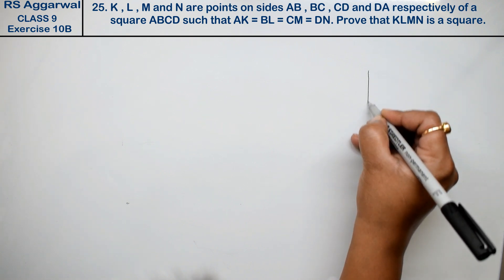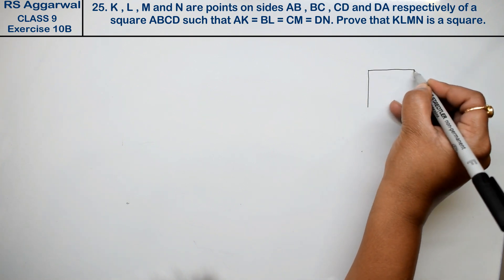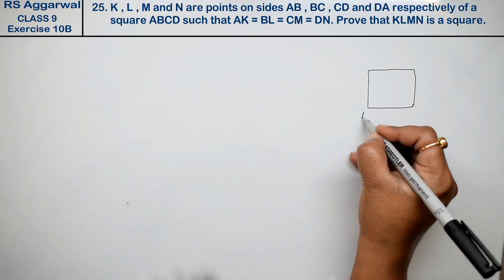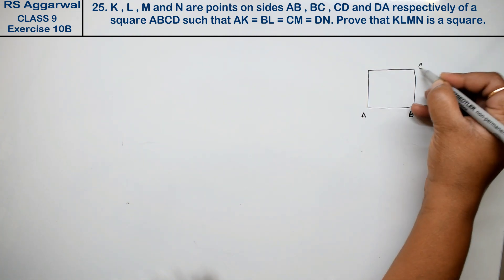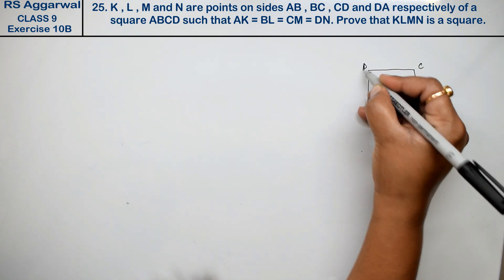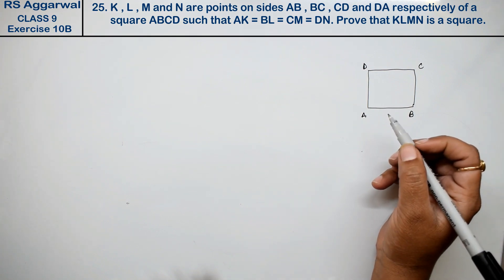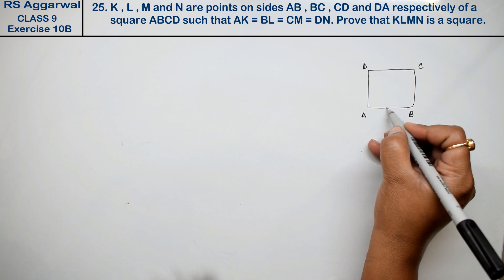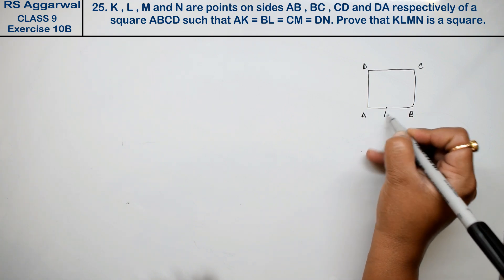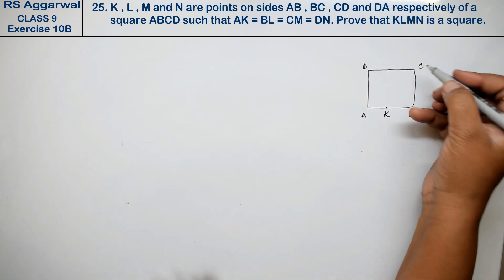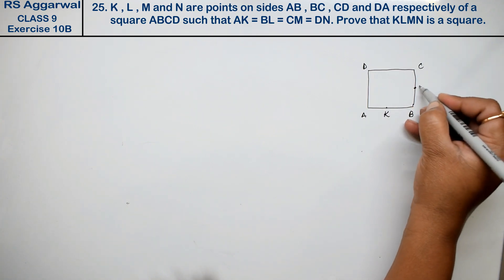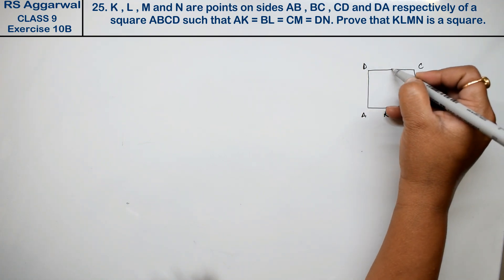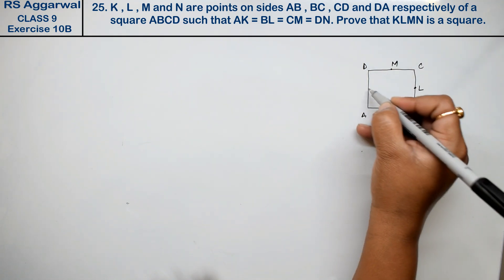So we have square ABCD. Line-wise: K is on AB, L is on BC, M is on CD, and N is on DA. Right friends?